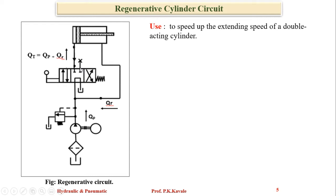If you observe carefully, one of the ports of the DCV is screwed, and ports A and B of the actuator are connected in such a way that during the extension stroke, the fluid from the rod side will not go to the tank—it is connected to the pump flow.